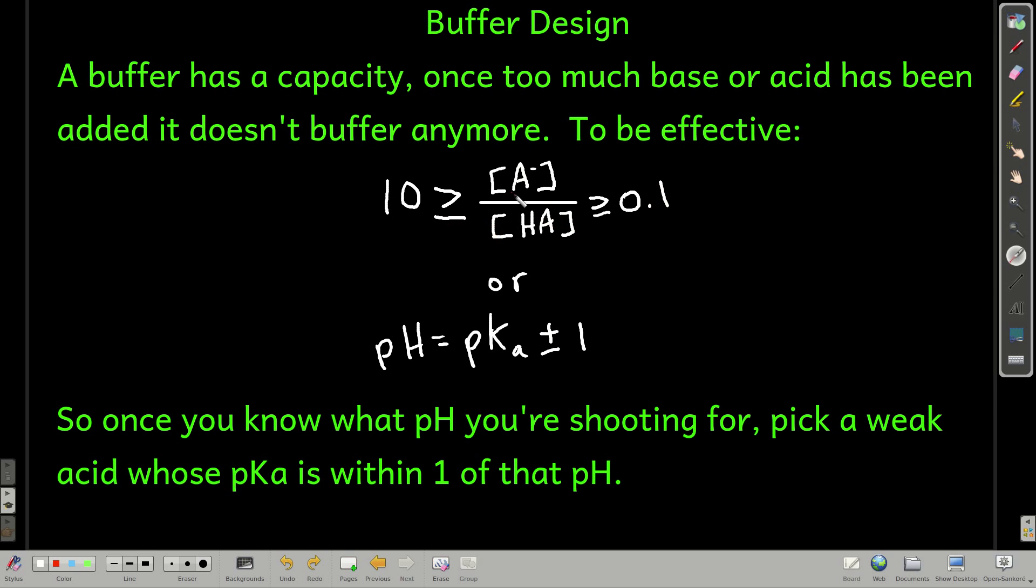In order for a buffer solution to be effective, the ratio of the base form to the acid form has to be between 10 and 0.1. No more than a factor of 10 from each other. So what that means is if you plug these two numbers into the Henderson-Hasselbalch equation, pH has to be equal to pKa plus or minus 1. So when you're making a buffer solution, first of all, you have to know what pH you want it to buffer at.